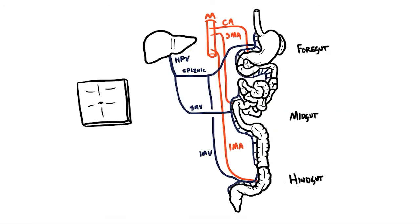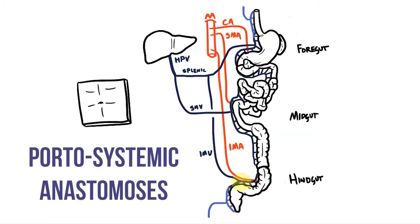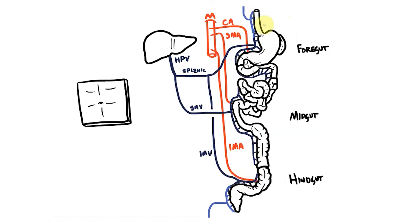The majority of the gut tube is drained by this portal venous system, but not all of it. At the proximal and distal ends, the gut tube drains into the systemic venous system and returns back to the heart as normal. Where these two venous systems meet we have connections between them, known as portosystemic anastomoses, and we'll find these at the esophagus and the rectum.